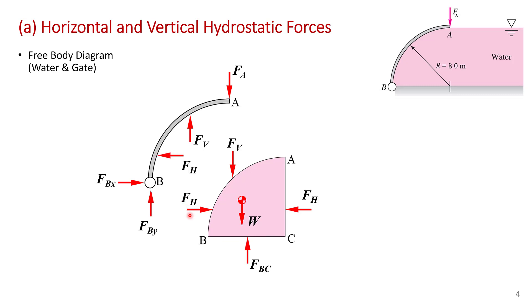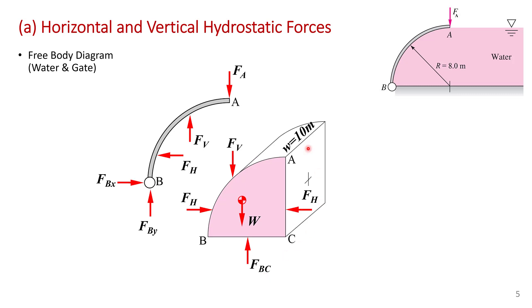The gate pushes back equally but in the opposite direction, so the force of the gate on the water is to the right. Similarly, we have the force of the water on the gate upwards, and the force of the gate on the water acting downwards. In addition, we have the weight of this quarter disk of water. This surface here is at a depth of R, so it has a uniform pressure distribution on it, giving an upward hydrostatic pressure force which we'll call FBC. With these free body diagrams, we can find the horizontal and vertical hydrostatic forces. The gate is 10 meters into the page, so we're dealing with this kind of geometry.